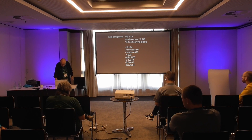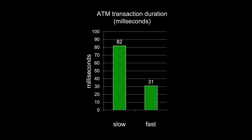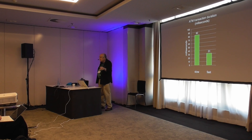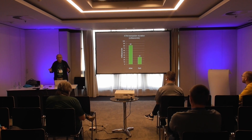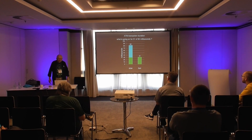Once we've set that up, we can run some tests and get results like this. The green bar on the left is how long a transaction takes using the baseline configuration. The small green bar on the right is after we've done some tuning and made the result as good as we can — then the transaction time is 31 milliseconds. So this blue rectangle is 51 milliseconds. What's going on in that 51 milliseconds? Why is the bar on the left so much bigger?